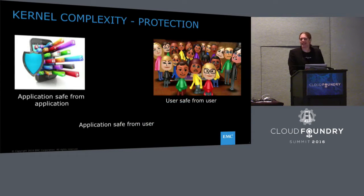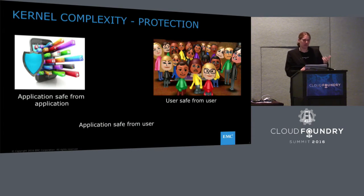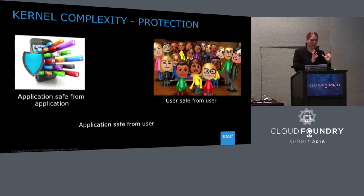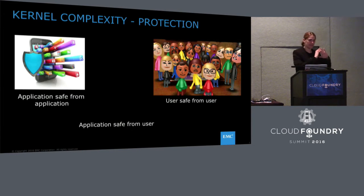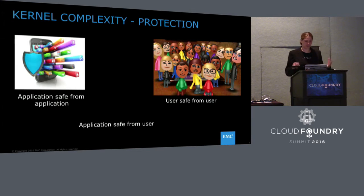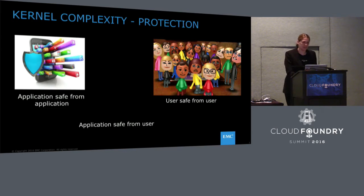Let's look at the kernel for a second and see if there is any complexity there. Most of the complexity comes from the one target the kernel should achieve, which is to protect — protect application from application, protect user from user, and protect application from user. This is basically one of the main jobs of the kernel.